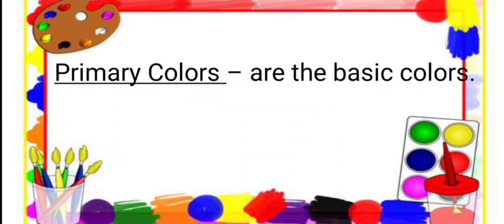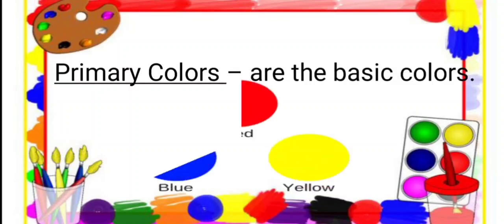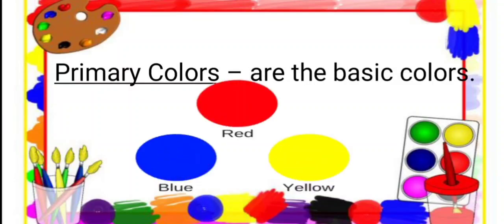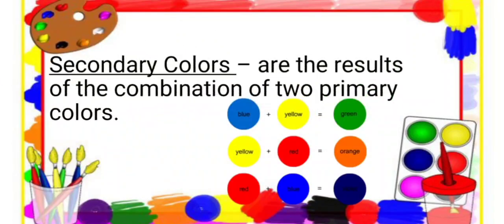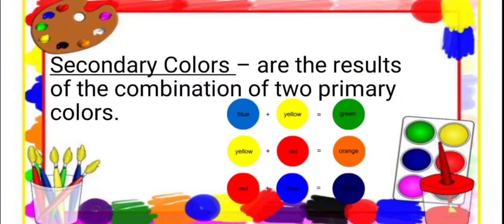Primary colors are basic colors — they are red, blue, and yellow. Secondary colors are the results of combining two primary colors. Our secondary colors are green, orange, and violet.